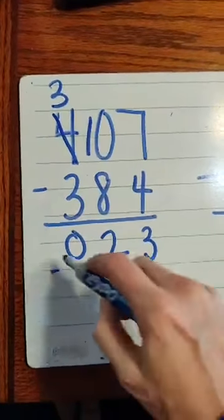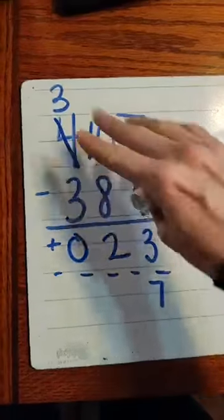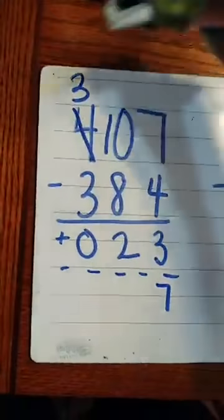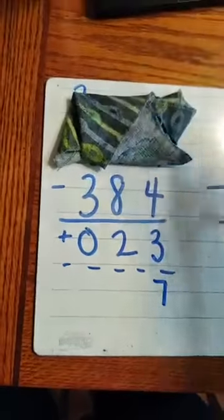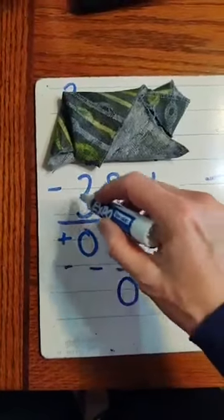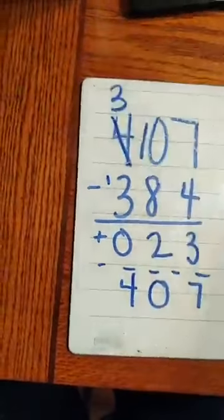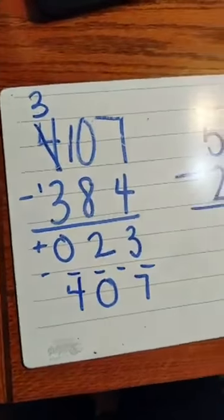Let's check. 4 plus 3. 7. Don't just look at the top. It would be best if while you're doing that, you cover up the top. So you don't know what you're supposed to get. 8 plus 2. 10. 3 plus 1. 4. Now look at it. Did I get it? Yes, I did.